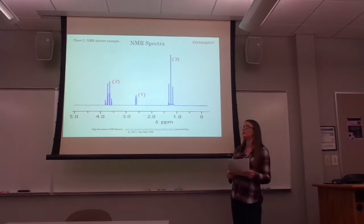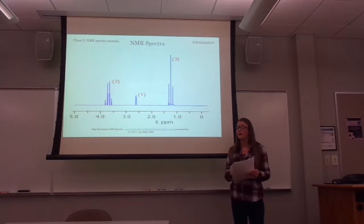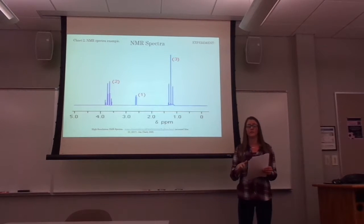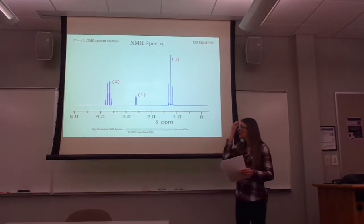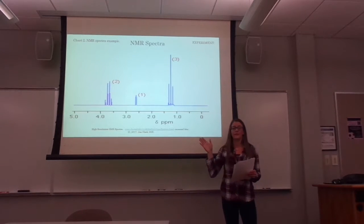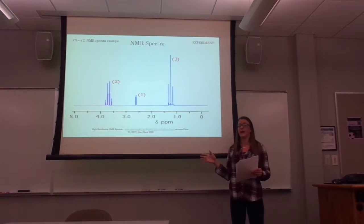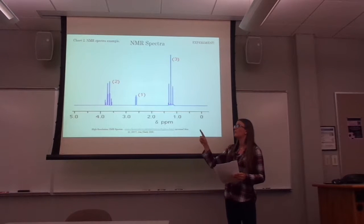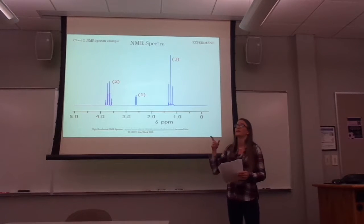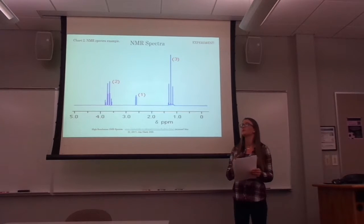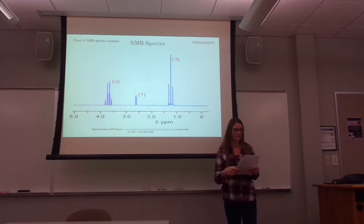To further determine the unknown compound, we also need to look at the NMR spectrum — we can't identify it from IR alone. This example NMR spectrum shows three different peaks, meaning there are three different types of hydrogens in the unknown compound's structure. The peak ratio in this case would be 2 to 1 to 3, meaning two hydrogens versus one hydrogen versus three hydrogens.